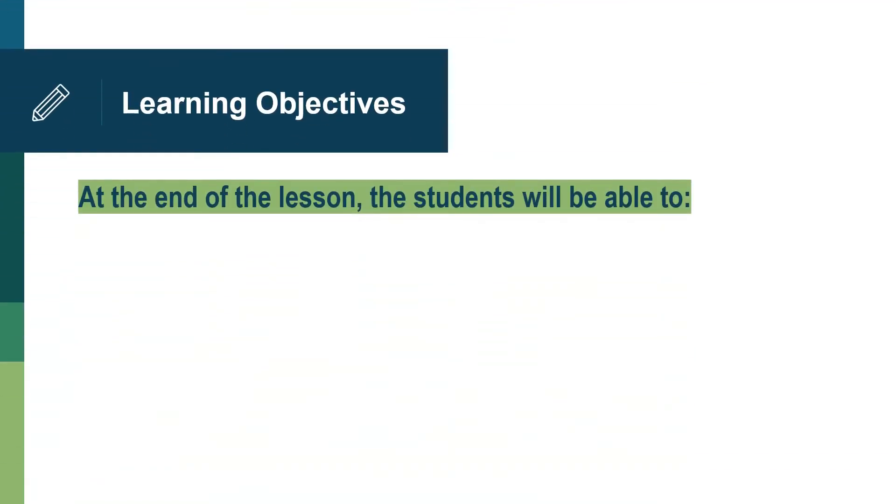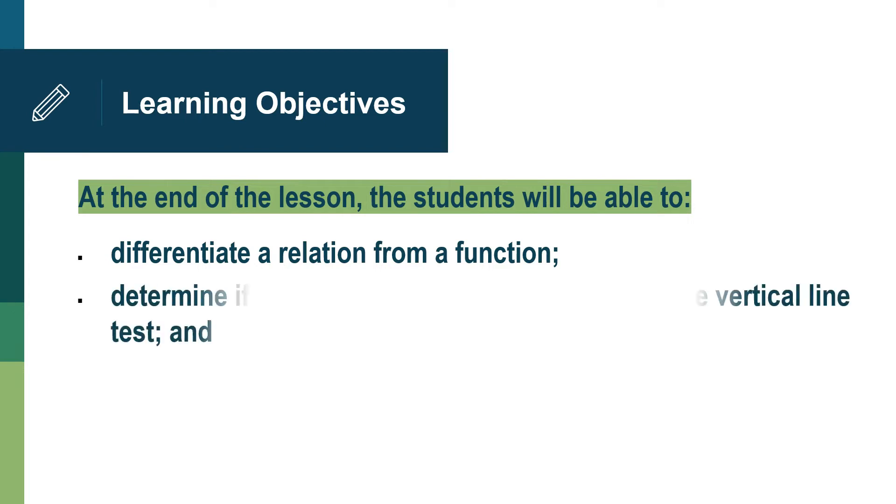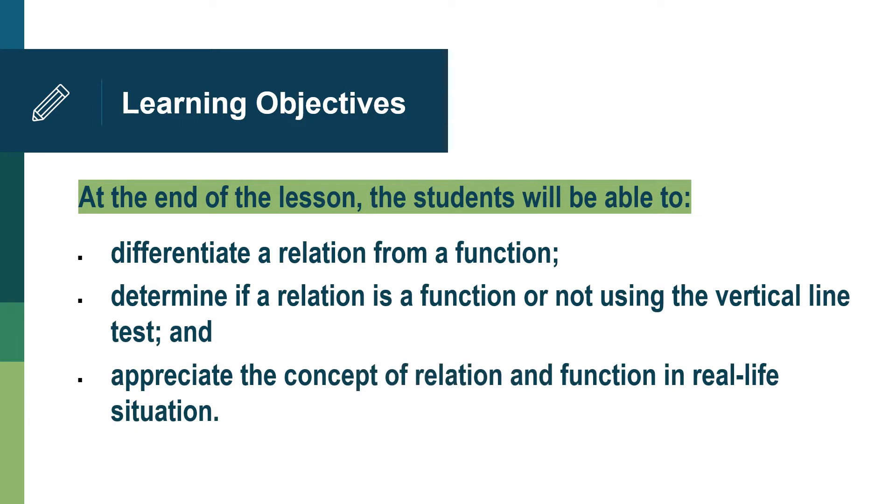At the end of this lesson, you are expected to, first, differentiate a relation from a function. Second, determine if a relation is a function or not using the vertical line test. And third, appreciate the concept of relation and function in real life situation.